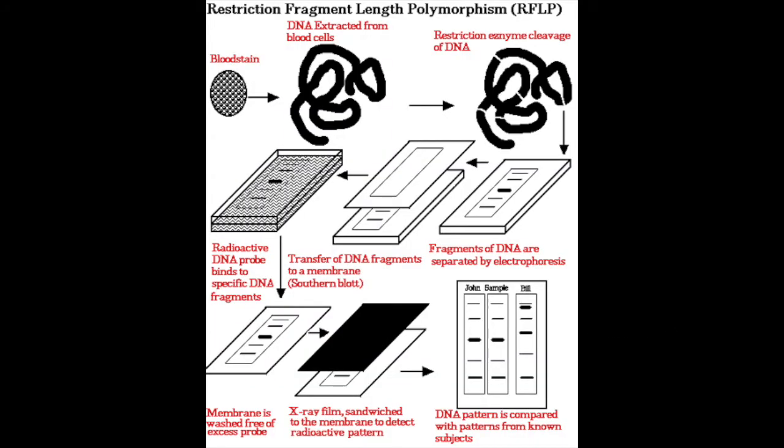So to start off, the Restriction Fragment Length Polymorphism, or the RFLP, is any variation in the DNA between individuals revealed by restriction enzymes that cut DNA into fragments of different lengths in consequence of such variations. The steps for the RFLP process is that you extract DNA nuclei from white blood cells.